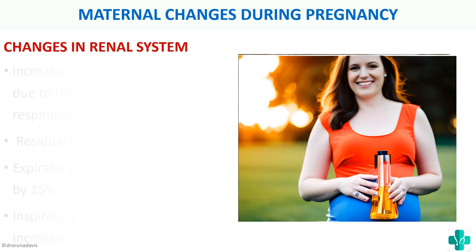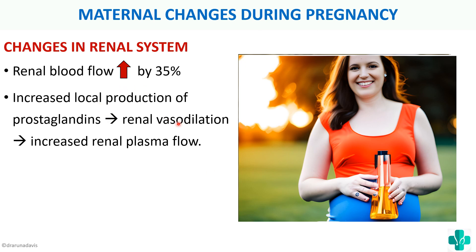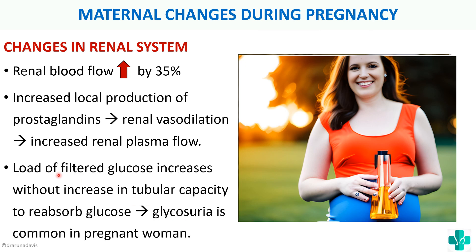In the renal system, renal blood flow increases by 35% due to increased local production of prostaglandins, which cause renal vasodilation and increased renal plasma flow. There can also be glycosuria during pregnancy. This happens because the load of filtered glucose increases without a corresponding increase in tubular capacity to reabsorb glucose. The tubular reabsorption capacity is constant, but with increased renal blood flow the glucose load rises, so glycosuria can occur in pregnant women.